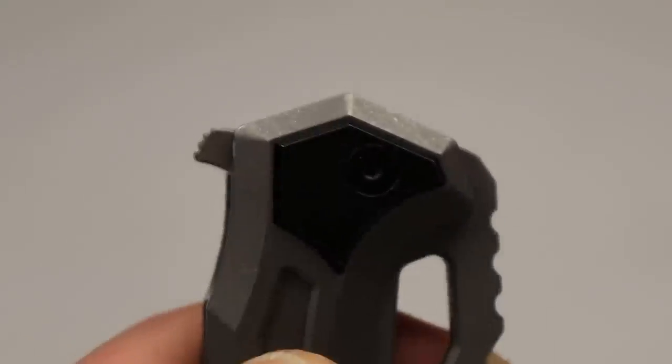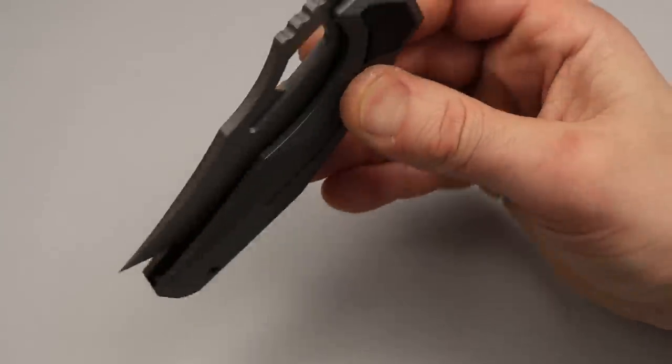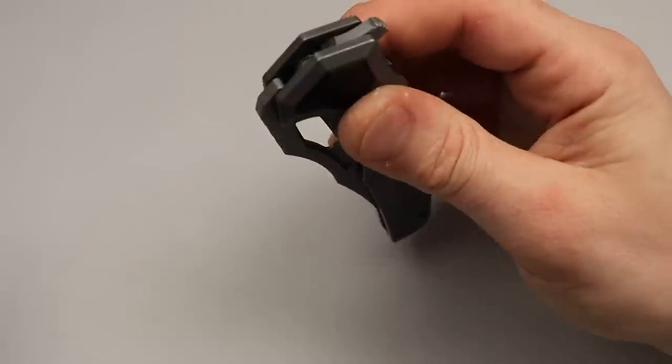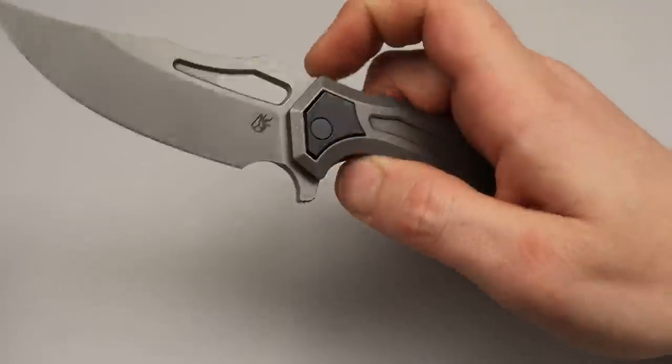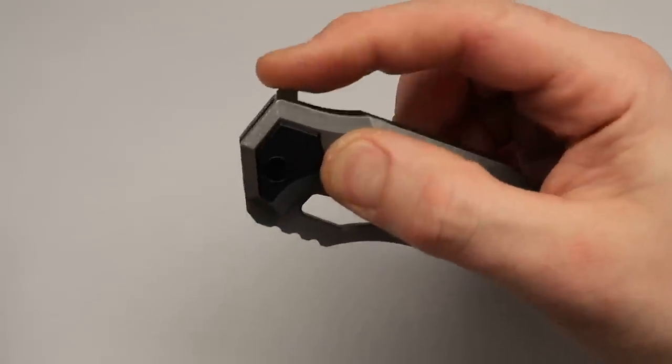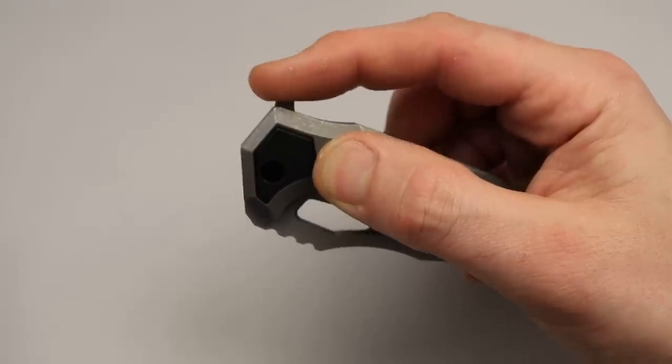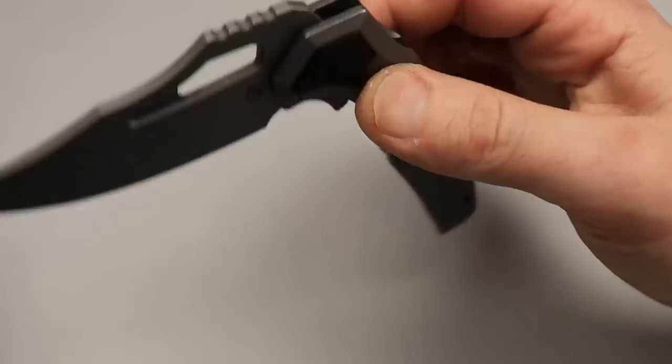Now the flipping action is really really good. A lot of leverage, it's a very comfortable flipper. The primary way to use it is just put your finger right there on the jimping kind of like a Ferrum Forge flipper tab, and just let the traction kind of take over and just yank down. Damn, is it snappy.